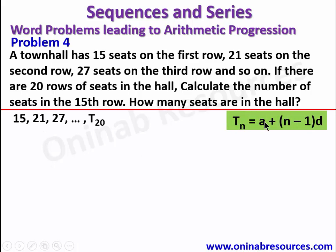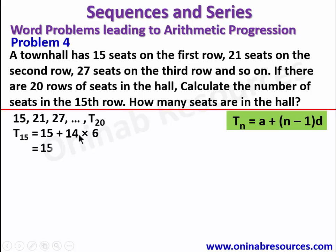In our solution, we are looking for the number of seats in the 15th row, which is T15. T15 = 15 + (15 − 1) × 6 = 15 + 14 × 6 = 15 + 84 = 99. So there are 99 seats in the 15th row.